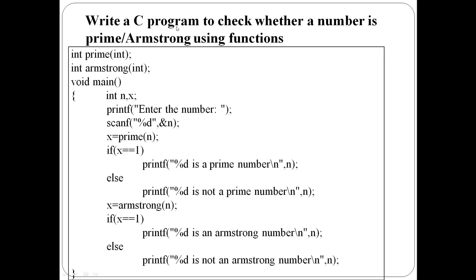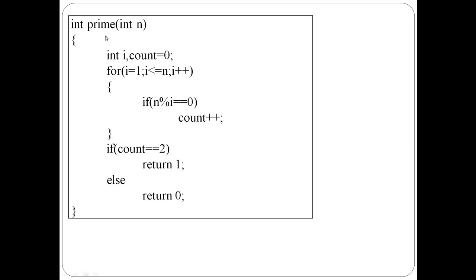Next question: write a C program to check whether the given number is a prime number or an Armstrong number using functions. Here there are two functions. The first function checks for prime number — function name is 'prime'. One number is passed as argument. It returns 1 if prime and 0 otherwise. Check using a for loop.